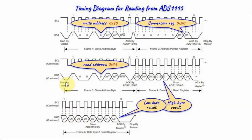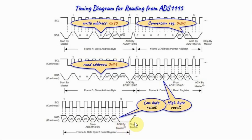Once the conversion register has been selected, the read operation begins. The microcontroller sends the start pulse, then the read address. After acknowledgement, the ADS1115 sends the high byte of the result, and the microcontroller acknowledges reception. Then the ADS1115 sends the low byte result, the microcontroller acknowledges, and terminates the read operation with a stop pulse.